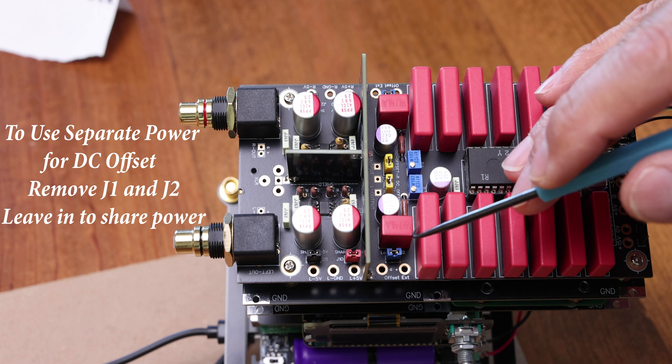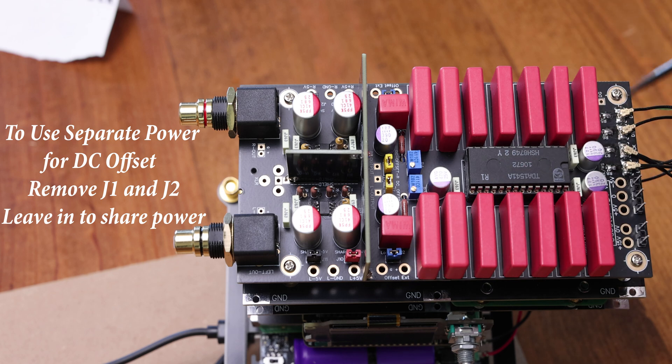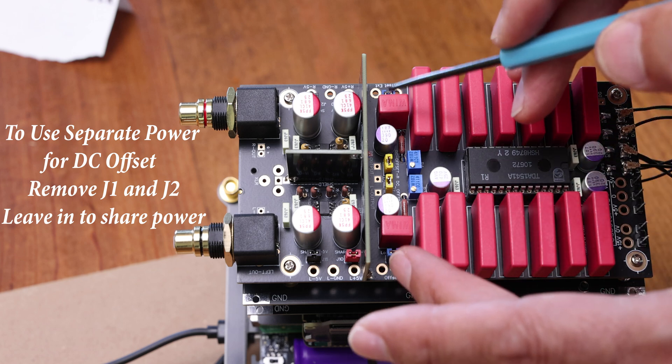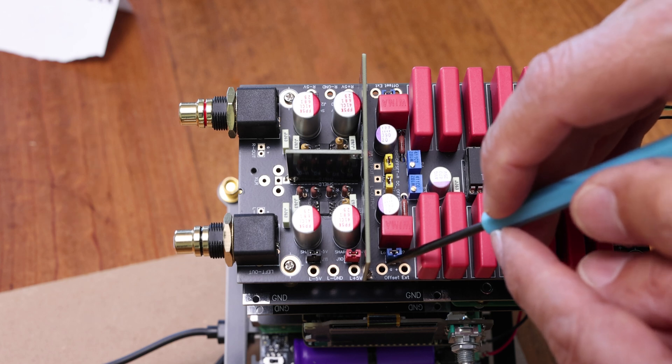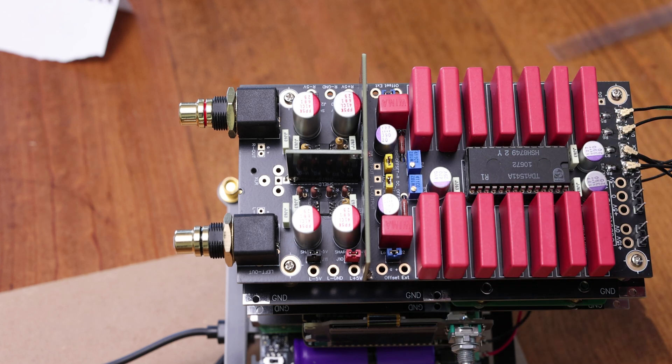Basically, if you want to provide your own power for the DC offset, you don't want to use the 5V that's coming on the board. So you can pull those jumpers out and provide your own 5V power for each, either for both of them together or each one of them separately.